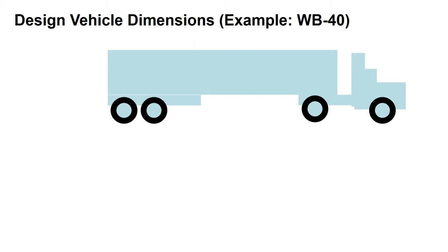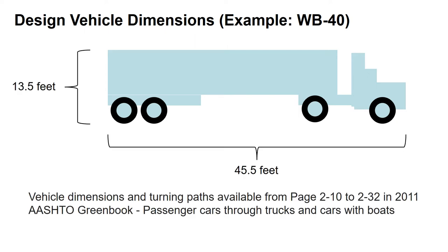Here's our WB-40, this is a wheel base 40. The overall dimension is 13.5 feet tall and 45.5 feet long. These are from the 2011 AASHTO Green Book — the most recent 2018 version doesn't have these vehicle dimensions. A lot of these are built into design software when you're looking at turning movements and turning radii, and whether the design vehicle will actually fit in the roadway you've designed.